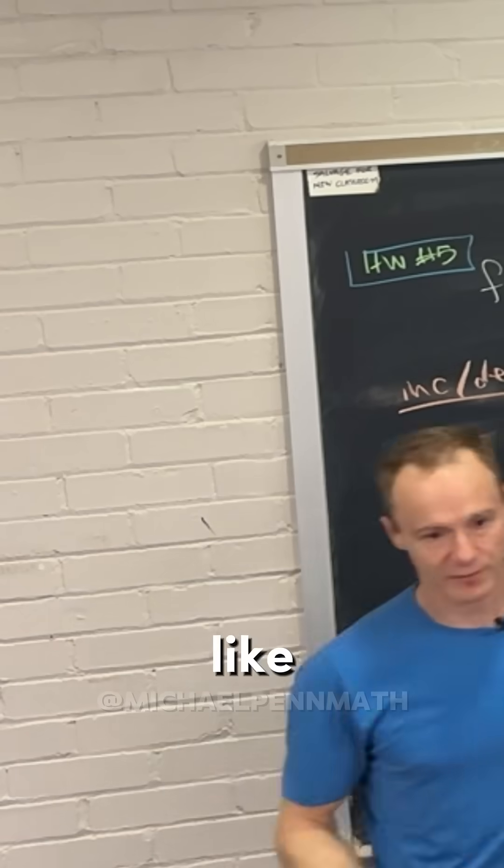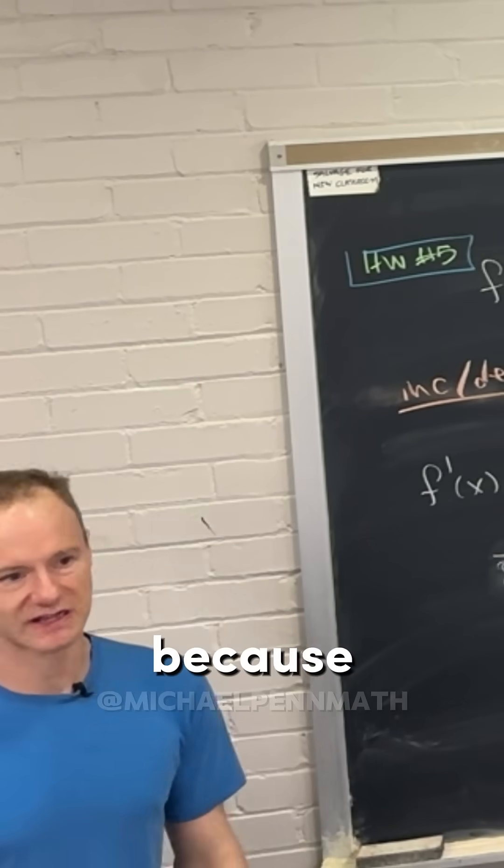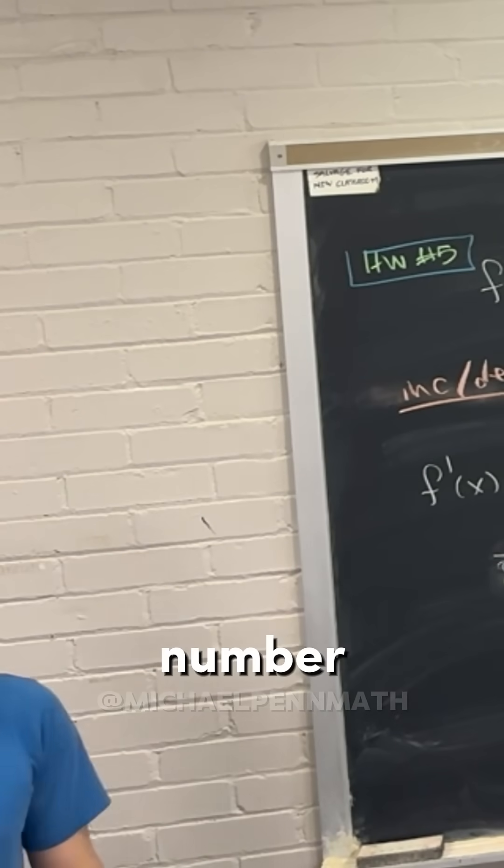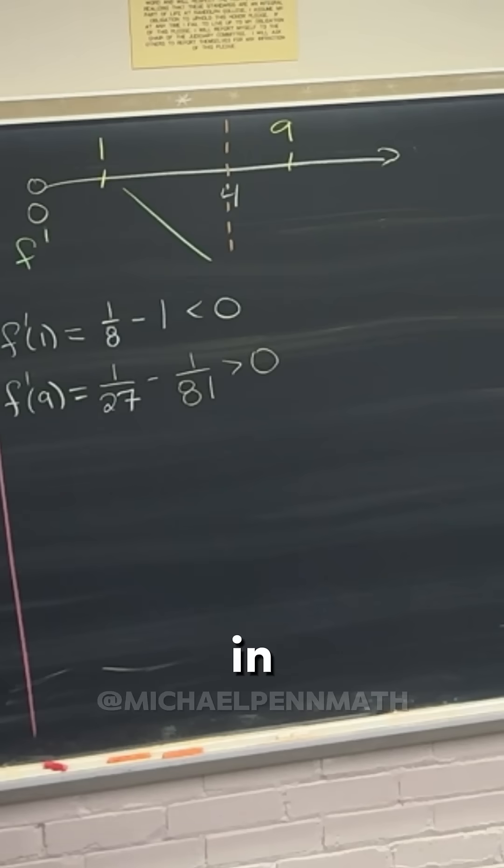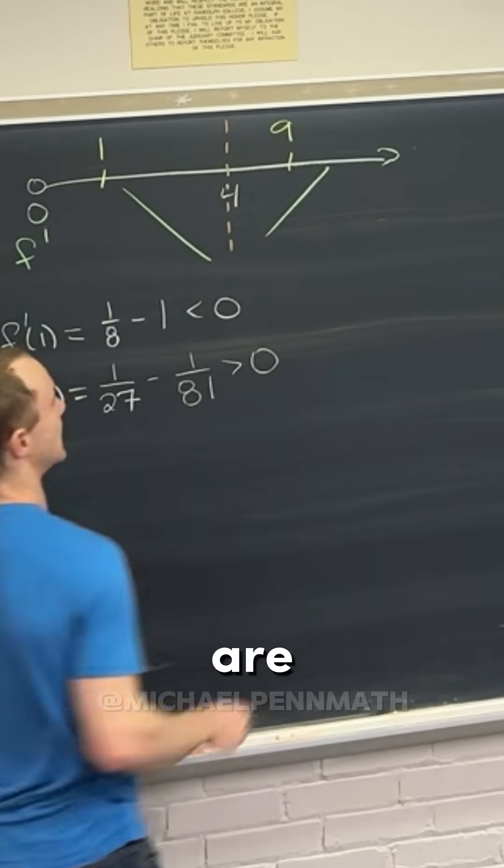Just like before, I don't really need to do the calculation because I can see that's going to be a positive number, because 1 over 27 is pretty clearly bigger than 1 over 9. So that means in this region we are increasing.